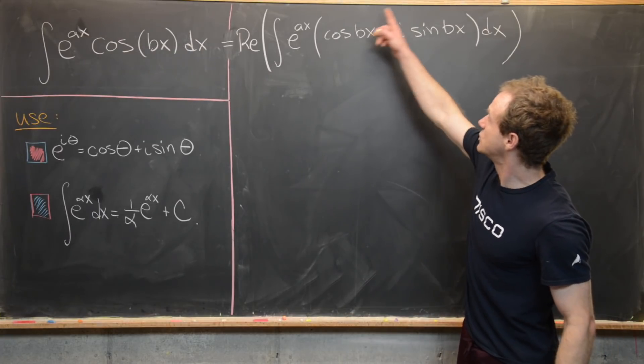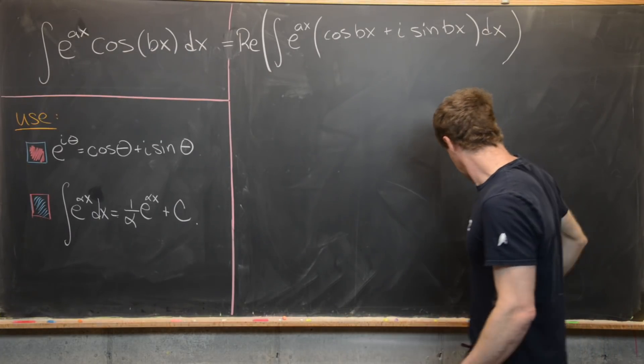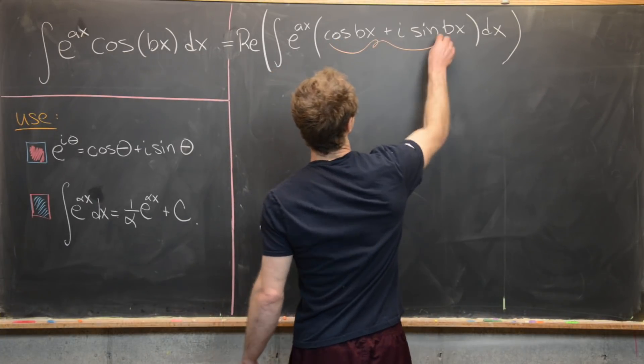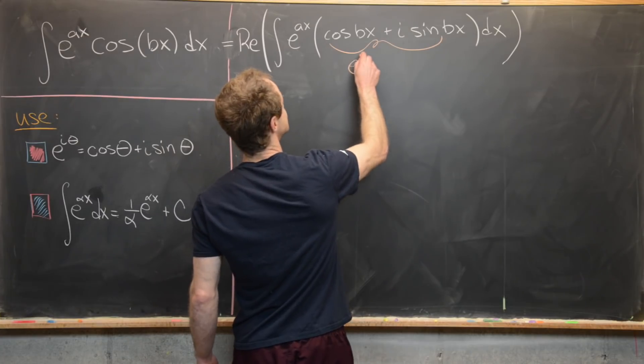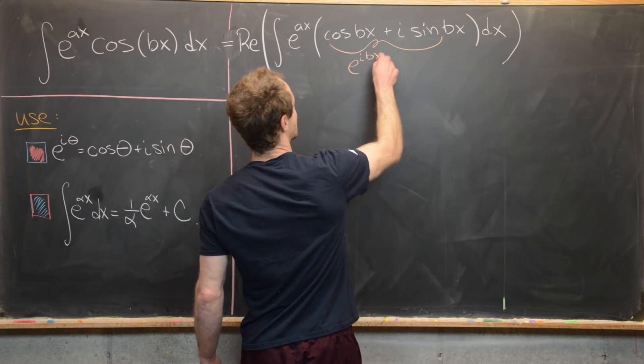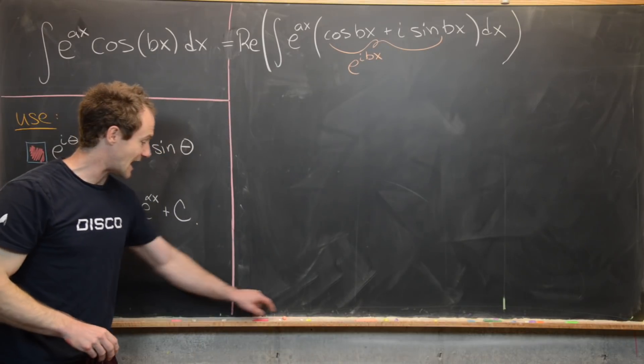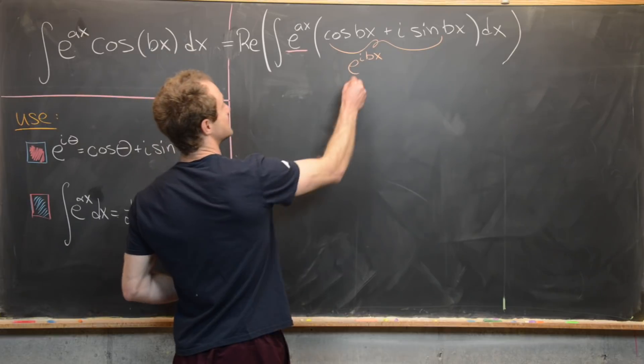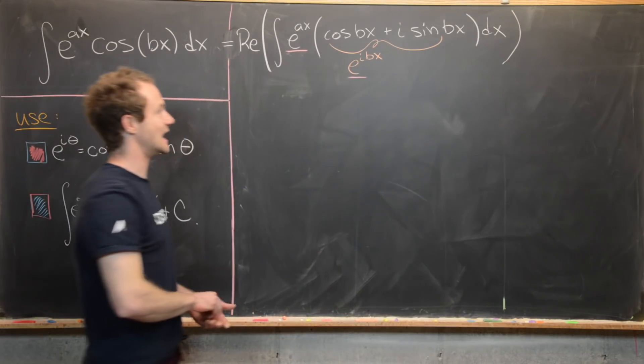So now what I can do is take this cos(bx) + i·sin(bx) and rewrite it with Euler's formula. Notice this guy is just e^(ibx). But now I can use exponent rules to mash these two things together, this e^(ax) and e^(ibx).